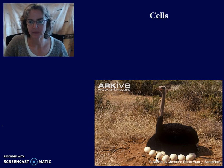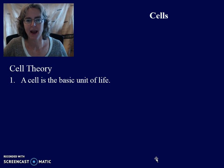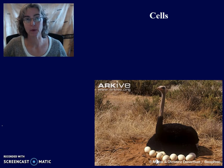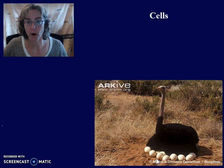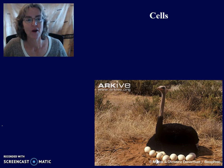Another exception would be a neuron. Some people have a neuron that might be as much as one meter in length, going from the lower part of the back all the way down to the big toe. Another exception would be a muscle cell that goes from the hip all the way down to the knee.